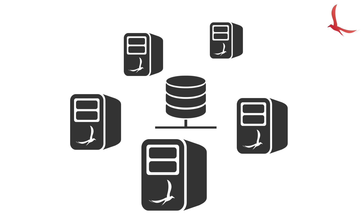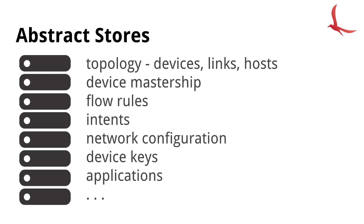Rather than viewing the distributed core as a monolithic database or key-value store and picking a technology such as Cassandra or MongoDB to build the system around, ONOS instead views the core as a collection of data structures. The core is built around a number of high-level store abstractions, each tailored for its data and each completely insulating the choice of distributed technology from the rest of the system. This allows the stores to evolve and improve independently of each other and of the rest of the system.